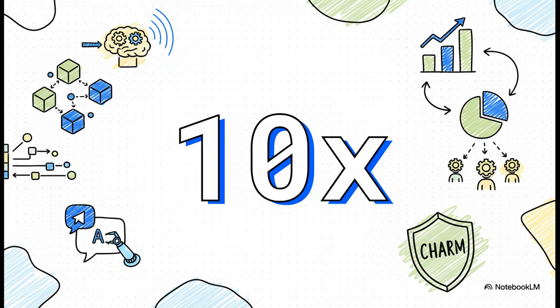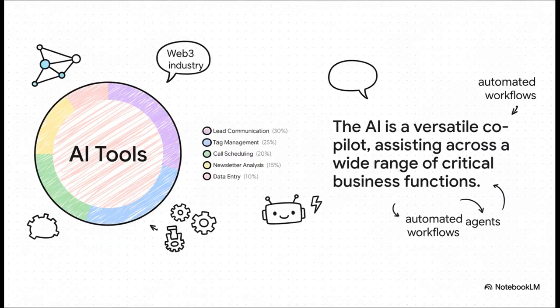And the impact of this is just huge. This one feature alone can make that critical task of connecting people up to 10 times faster than doing it the old manual way in Telegram. 10 times. And this automation is everywhere across the platform. The AI helps with everything from smart tag management and communicating with leads, all the way to scheduling calls and even analyzing the results of your newsletter campaigns.